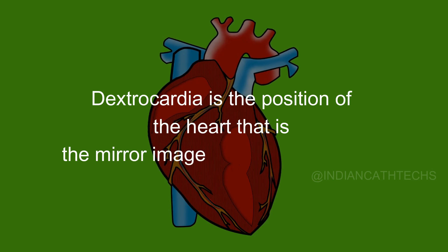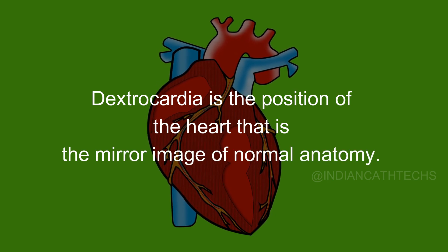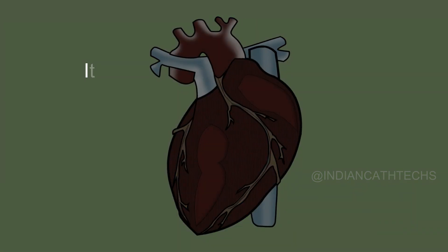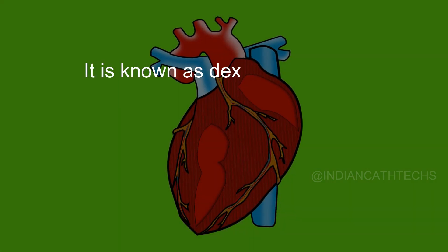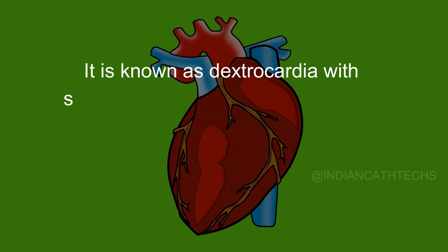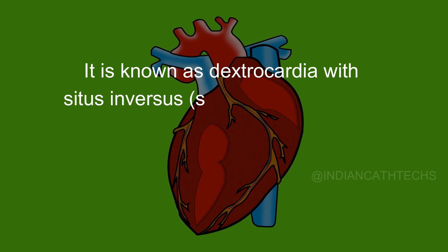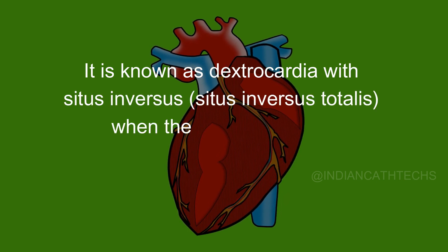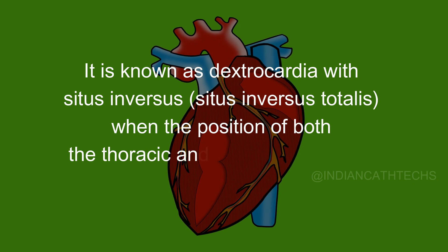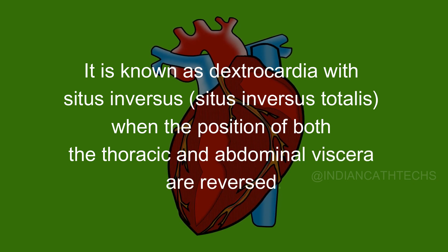Dextrocardia is the position of the heart that is the mirror image of normal anatomy. It is known as dextrocardia with situs inversus, that is, situs inversus totalis, when the position of both the thoracic and abdominal viscera are reversed.